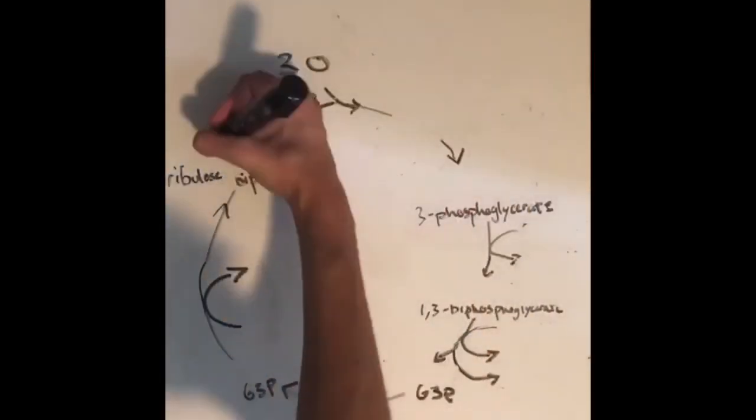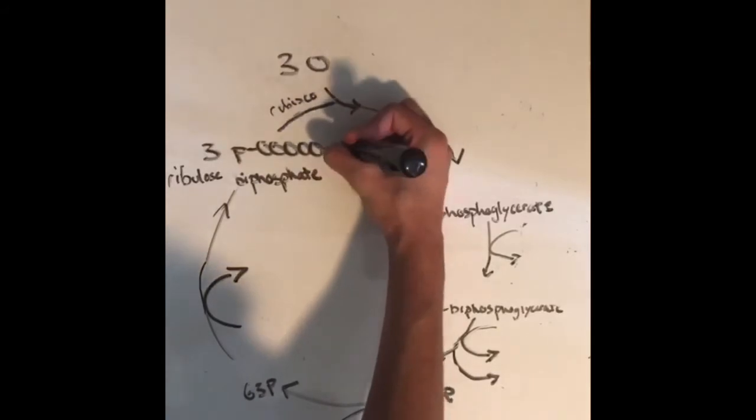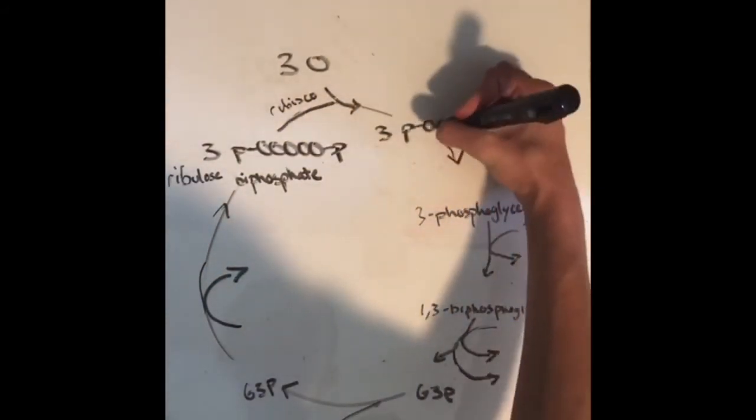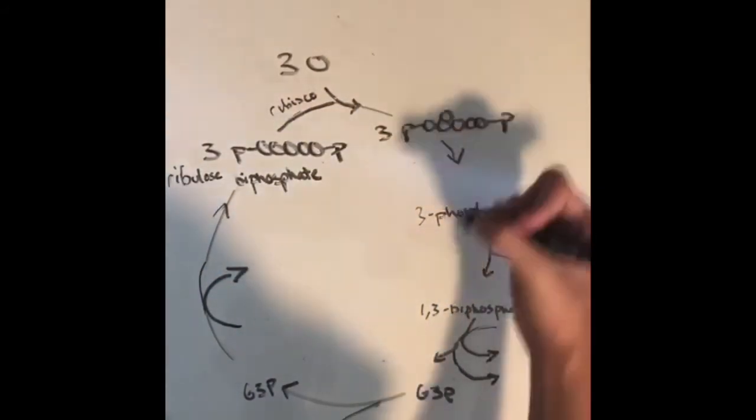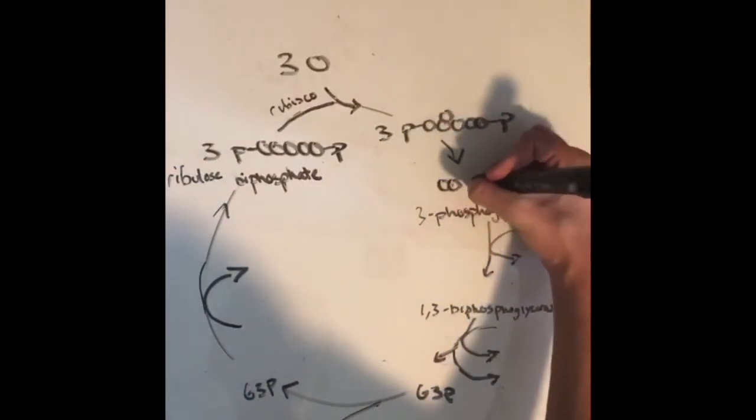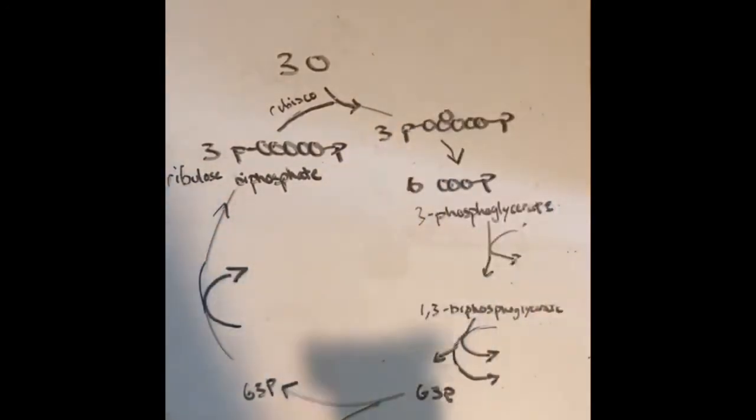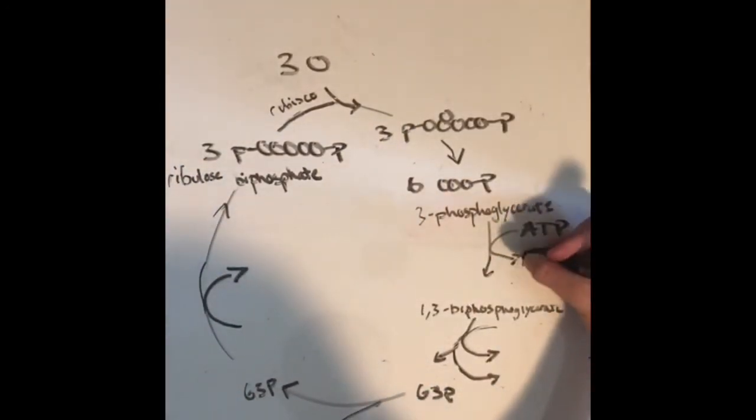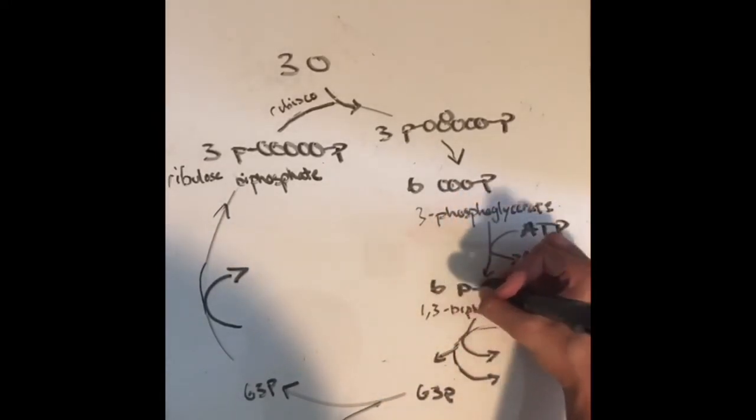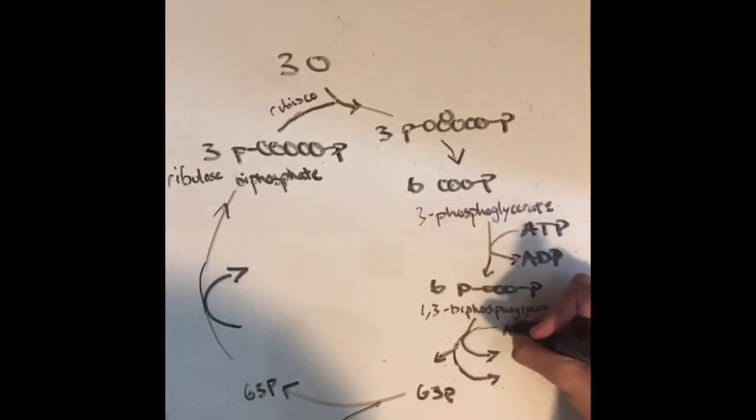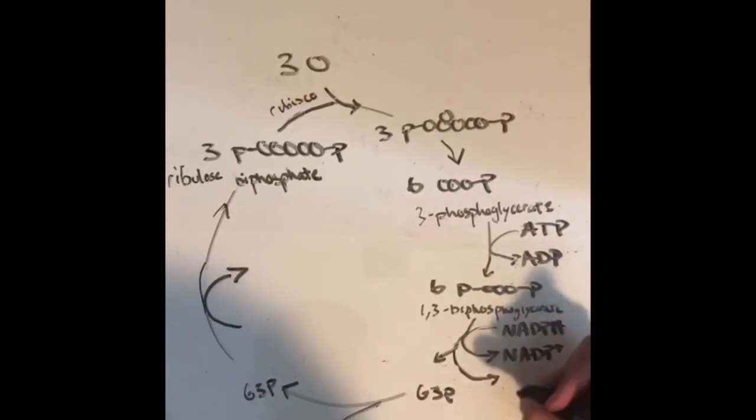The Calvin cycle is another step in photosynthesis, which converts the carbons in carbon dioxide into glyceraldehyde 3-phosphate, otherwise known as G3P. Contrary to the catabolic citric acid cycle, the Calvin cycle is anabolic and consumes energy as it builds more complex carbohydrates. There are three major phases in the Calvin cycle: carbon fixation, reduction, and ribulose biphosphate regeneration.